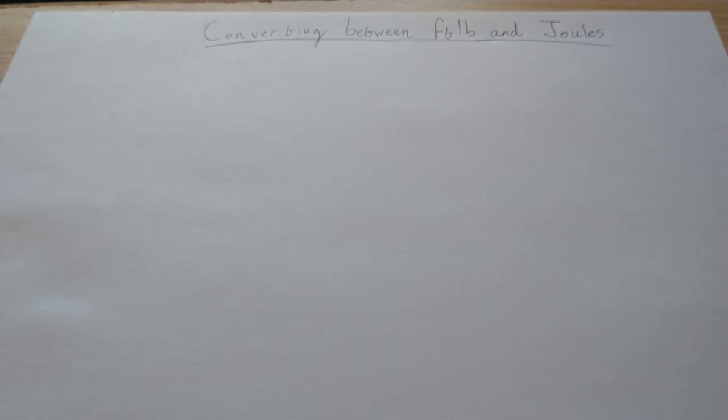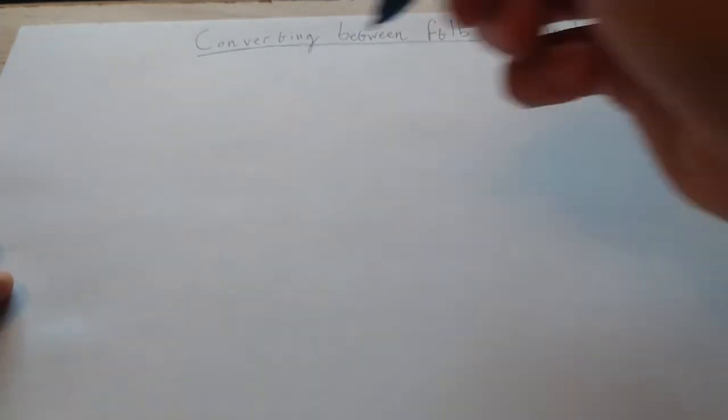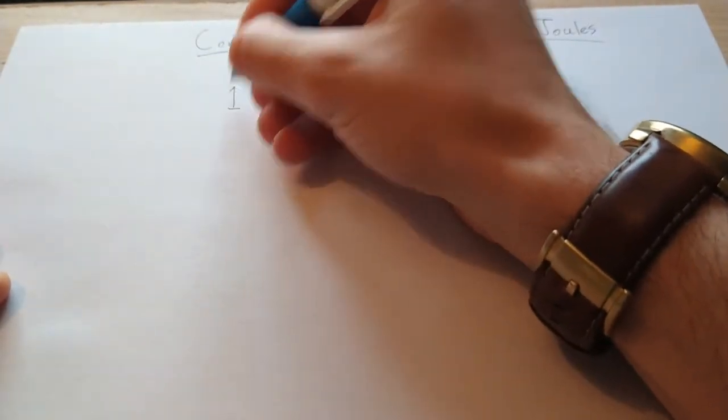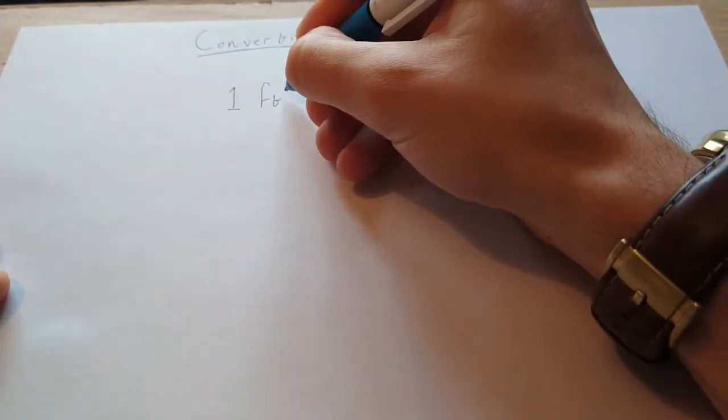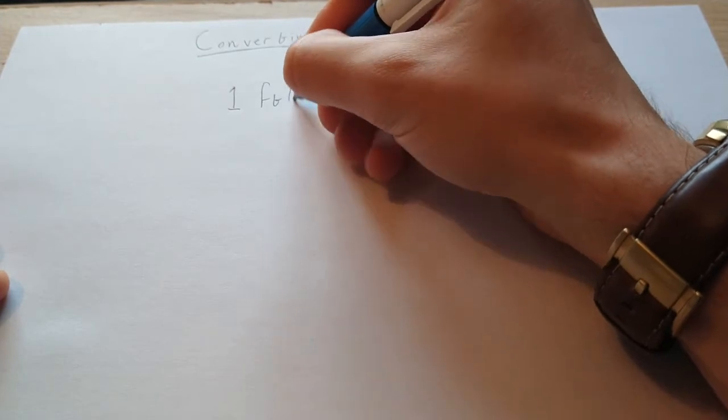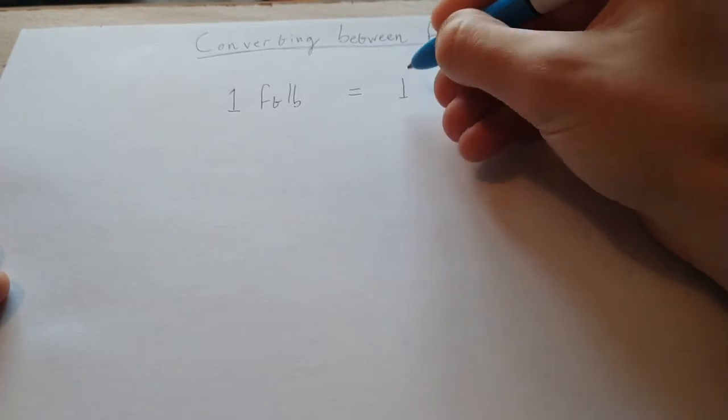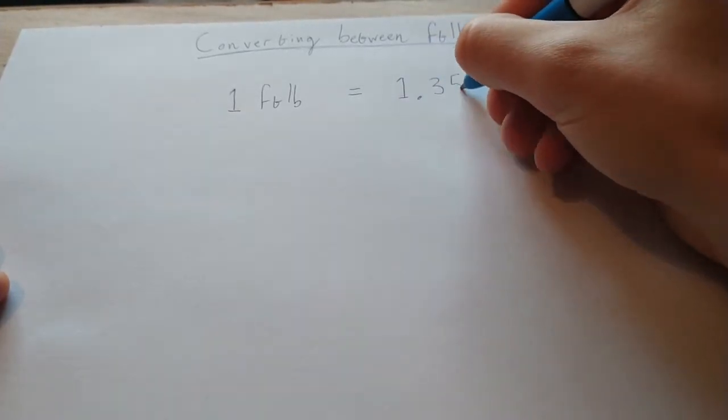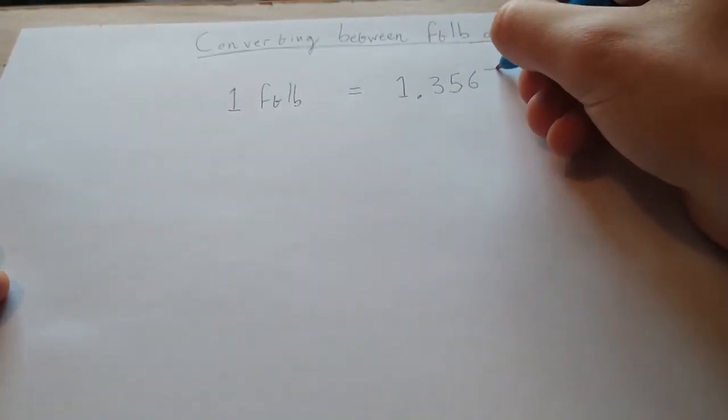So we'll get right into it with the conversion because I'm sure that's what everyone's actually here for. The conversion is that one foot pound of muzzle energy is equal to 1.356 joules.